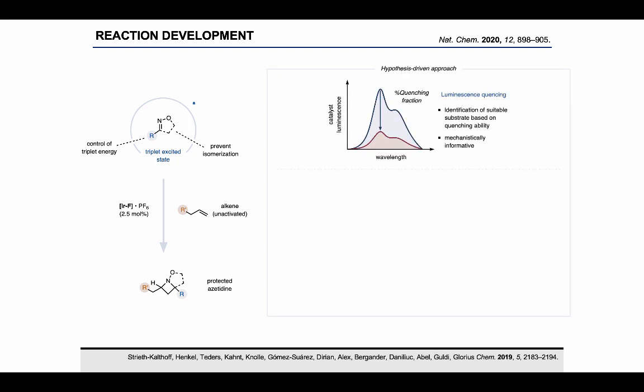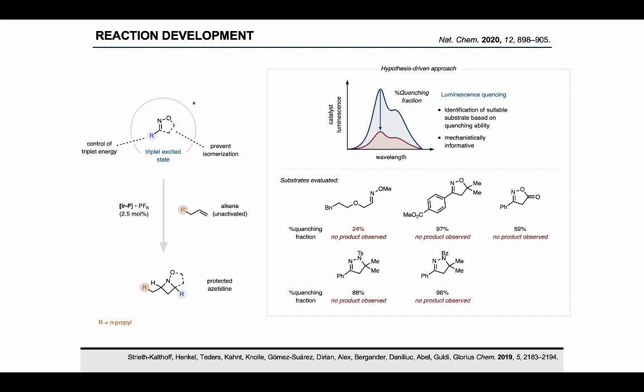To probe whether a substrate can actually be activated through energy transfer from the photocatalyst, especially when the triplet energy is not known, we measured the luminescence quenching for each substrate, which allows us to guide our substrate evaluation based on the quenching ability of each substrate. For example, aliphatic oximes are poor substrates for this reaction as they do not strongly interact with the catalyst, likely because their triplet energy is just too high. In contrast, aromatic oximes were found to be strong quenchers of the photocatalyst. However, surprisingly we did not observe any azetidine formation with these substrates.